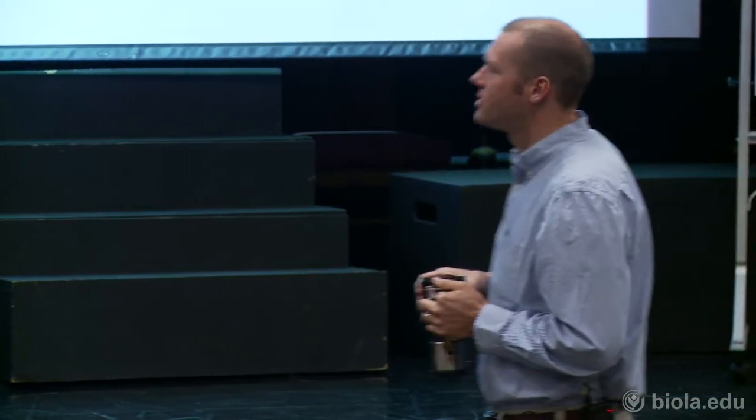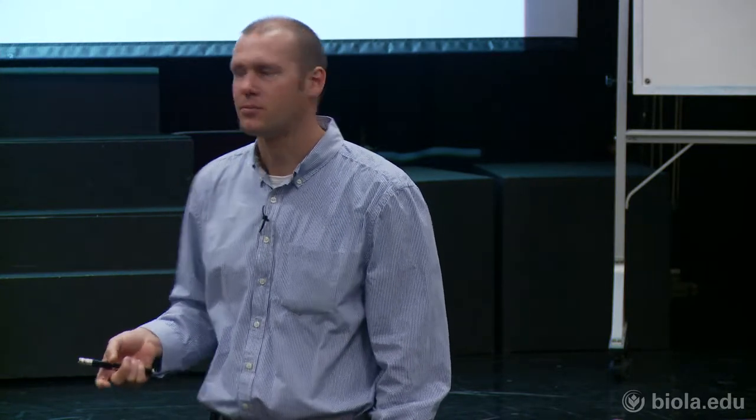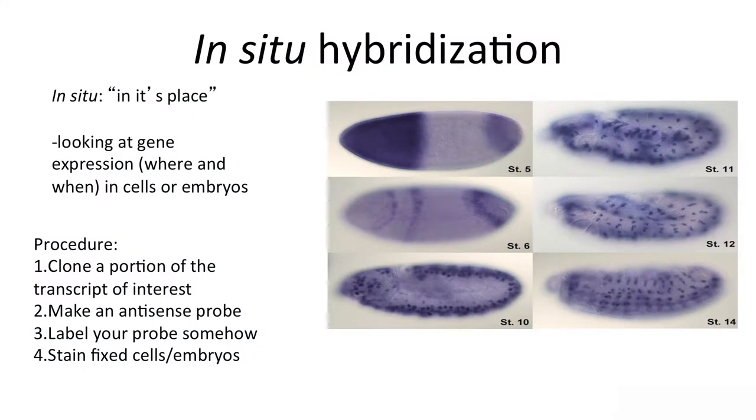A technique called in-situ hybridization lets us look at embryos directly. In-situ hybridization is basically like doing a northern blot on an intact entire embryo — rather than extracting all the mRNA and running it on a gel, we're probing the entire embryo. In-situ means roughly in Latin 'in its proper place or in its location.' We're trying to say: what are the cells in the embryo that express a certain gene I'm interested in? This is gene expression analysis in the embryo itself.